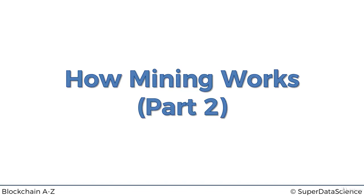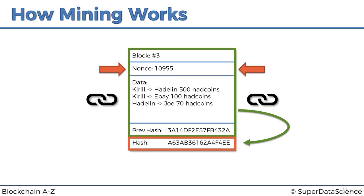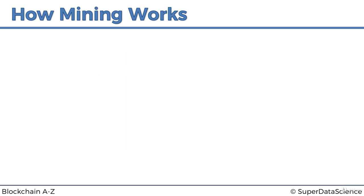Alright, part 2: how mining works. We left off last time with this block, and we now know that we can control or vary the hash of the block by varying the nonce — the extra field we identified. So how does this tie in with mining? The first thing we need to do is make a statement: a hash is a number. If you already know this, bear with me — this will just take a minute.